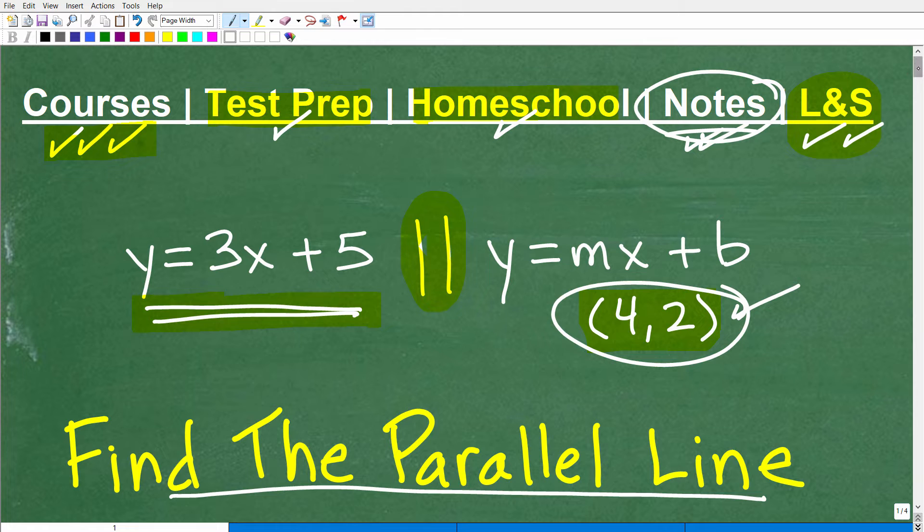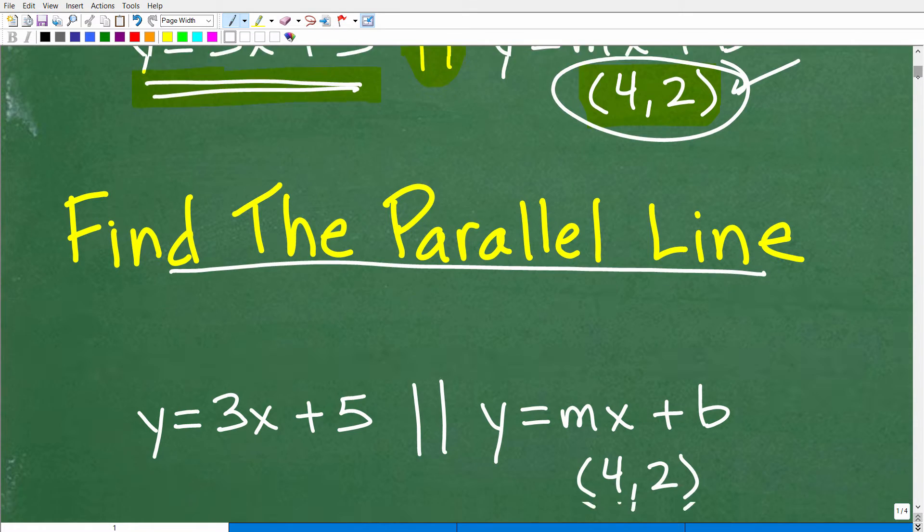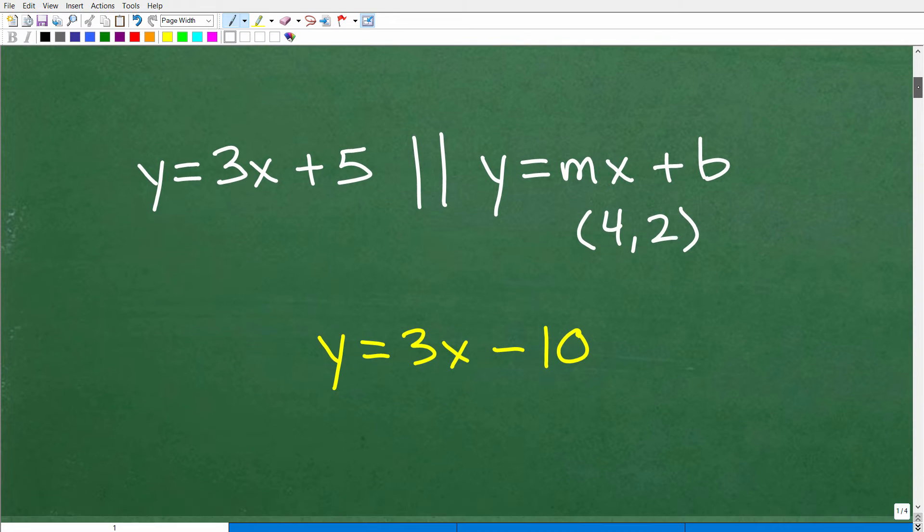Okay, so I'm going to go ahead and give you the answer right now. Then we're going to talk about exactly how to solve this problem. So here is our line. We have a line y equals 3x plus 5. A line that's parallel to this line that passes through this point, 4, 2, is this line right here, y equals 3x minus 10. This is the answer.